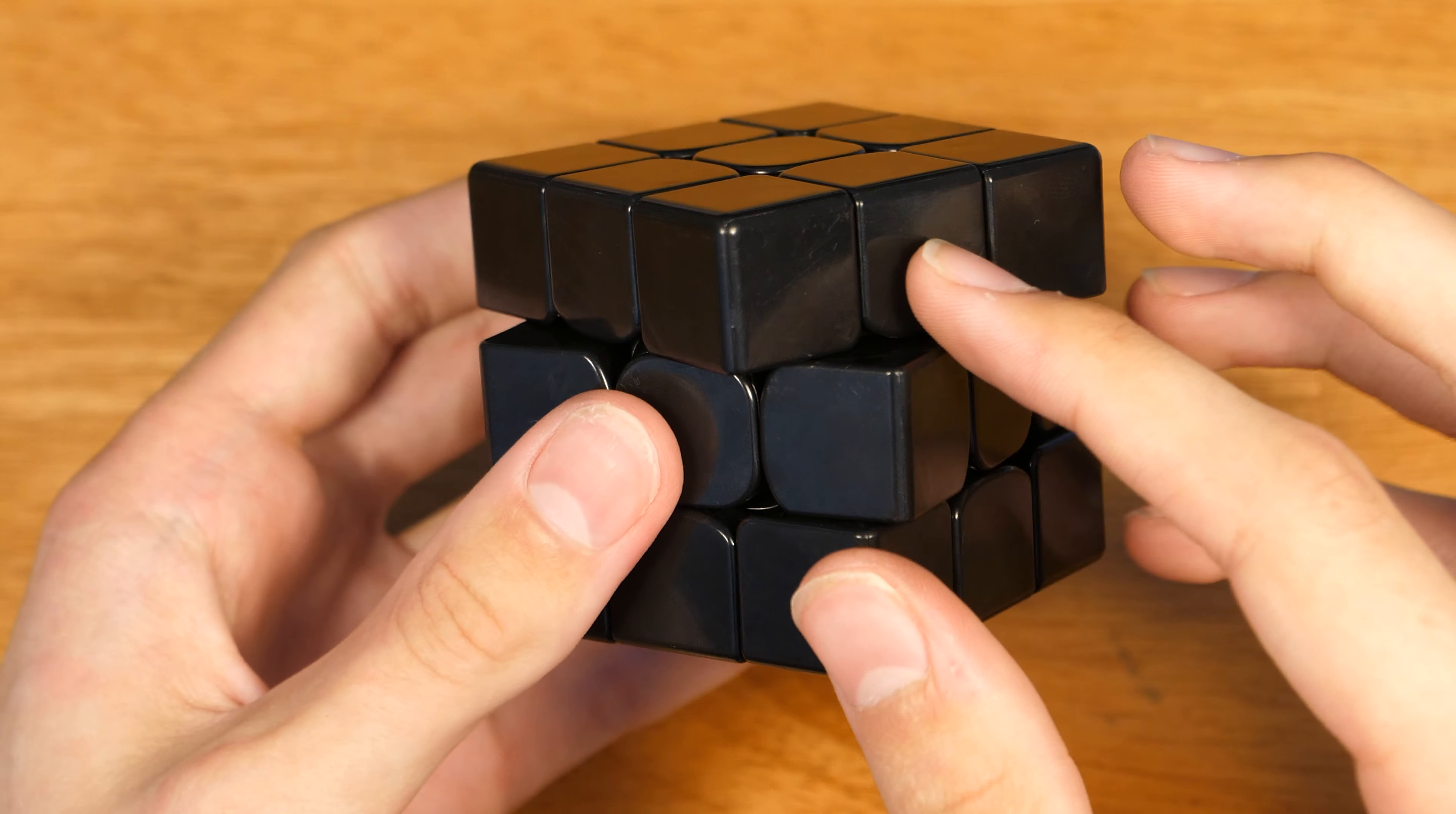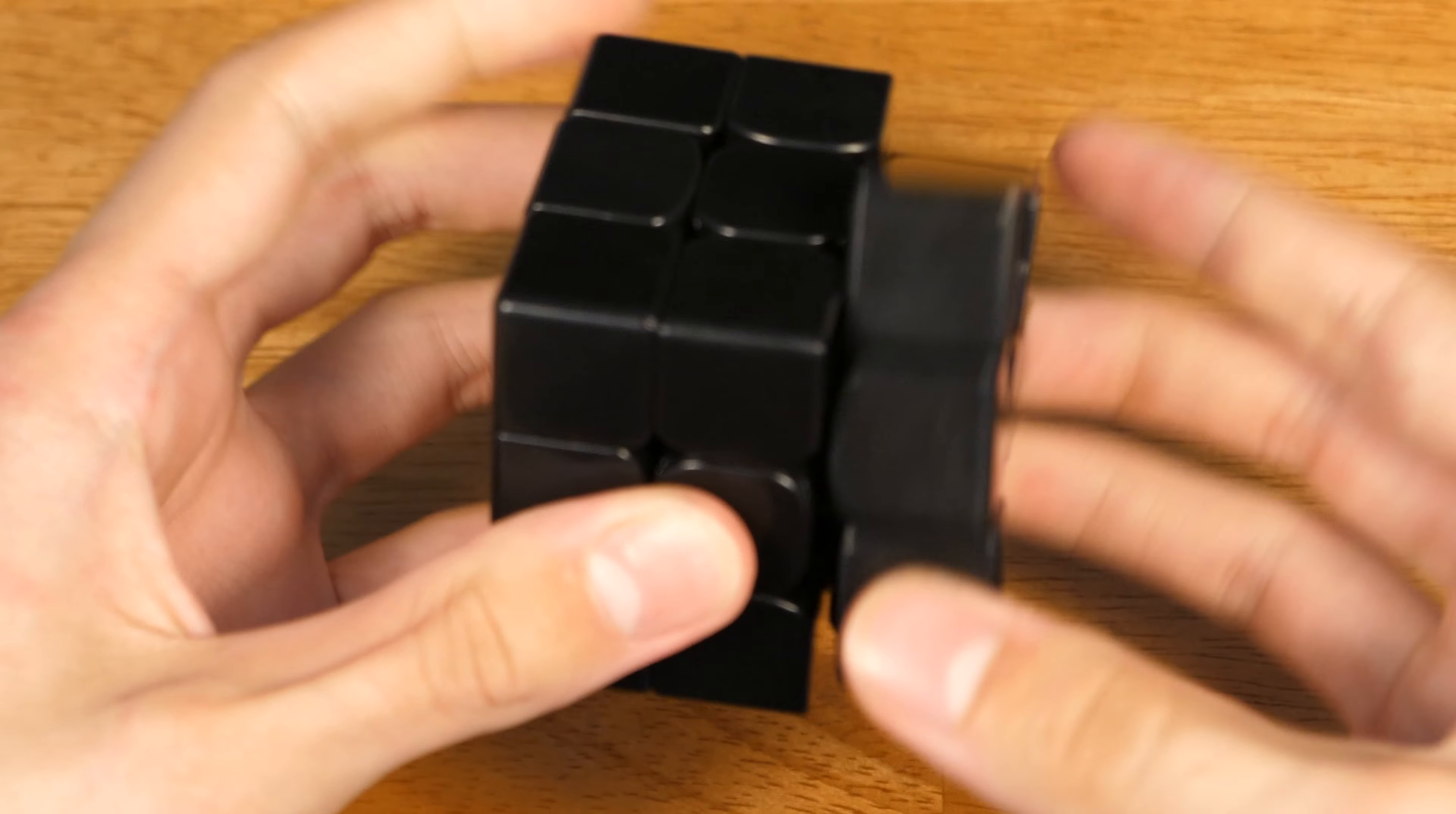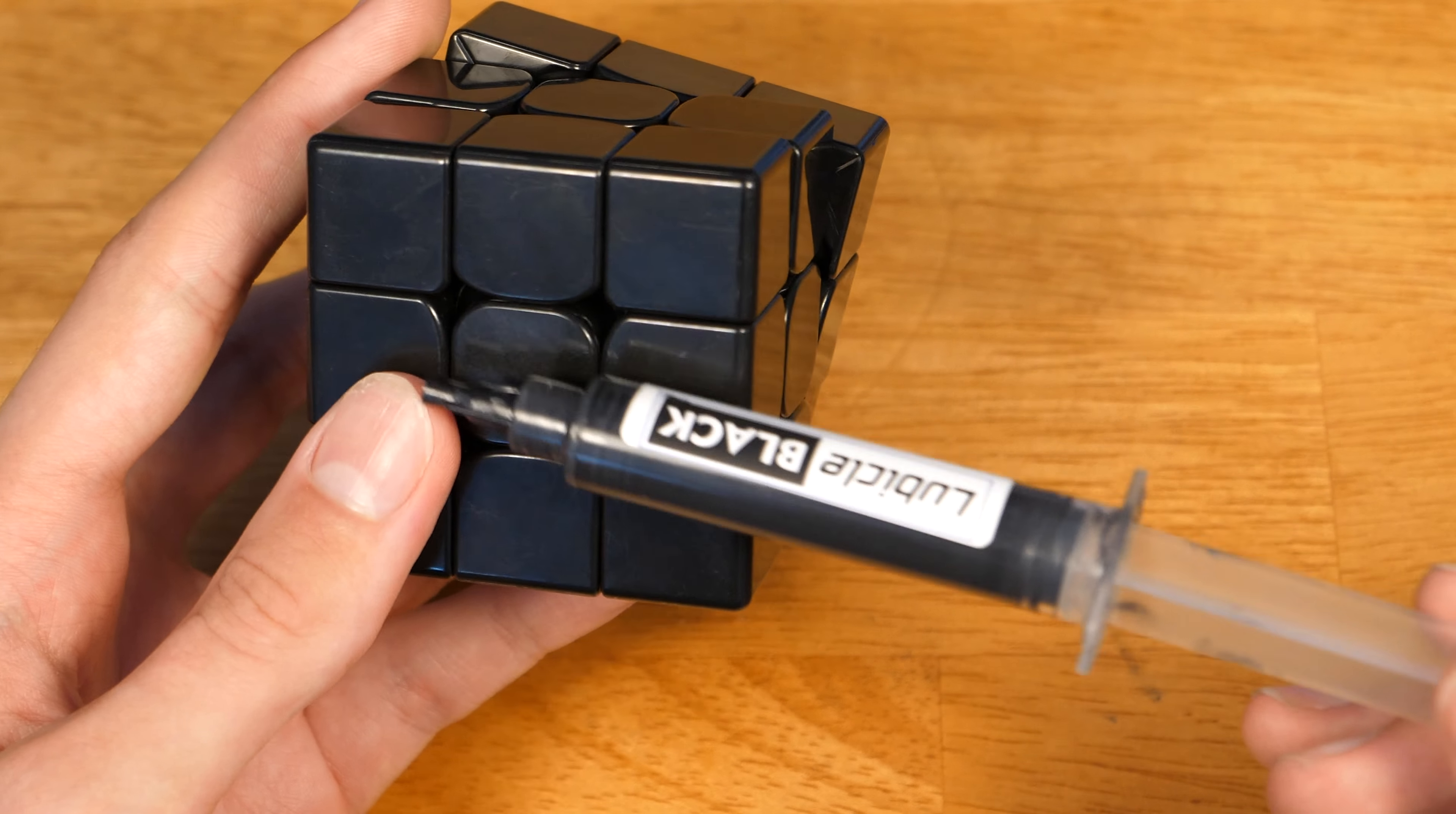So, as you guys saw a few minutes ago when I opened this, I could barely turn this. I could probably only do like five, six TPS on that cube. But now... What? This is ridiculous. So just that little bit of Lubicle Black lube actually just made this cube feel like a different cube altogether.